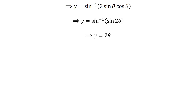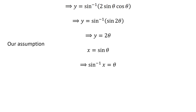Application of inverse function properties gives us y is equal to 2 times theta. As per our assumption, x is equal to sine of theta, so application of inverse function properties implies theta is equal to inverse sine of x. Therefore the above statement implies y is equal to 2 times inverse sine of x.